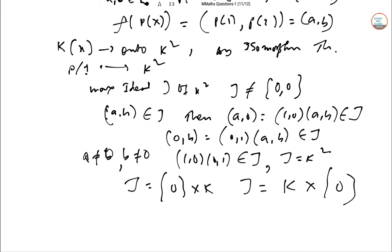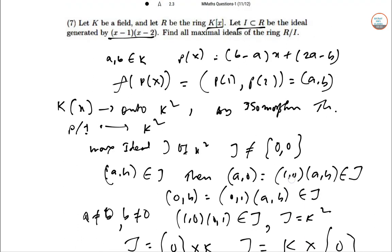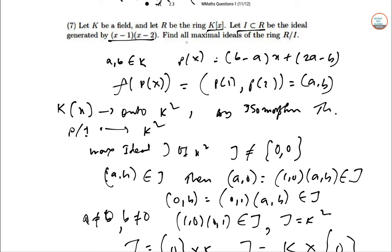The conclusion is that there are two maximal ideals in R/I: maximal ideals are generated by (x-1) and (x-2). Hence, maximal ideals are 2. Problem 7 is done.